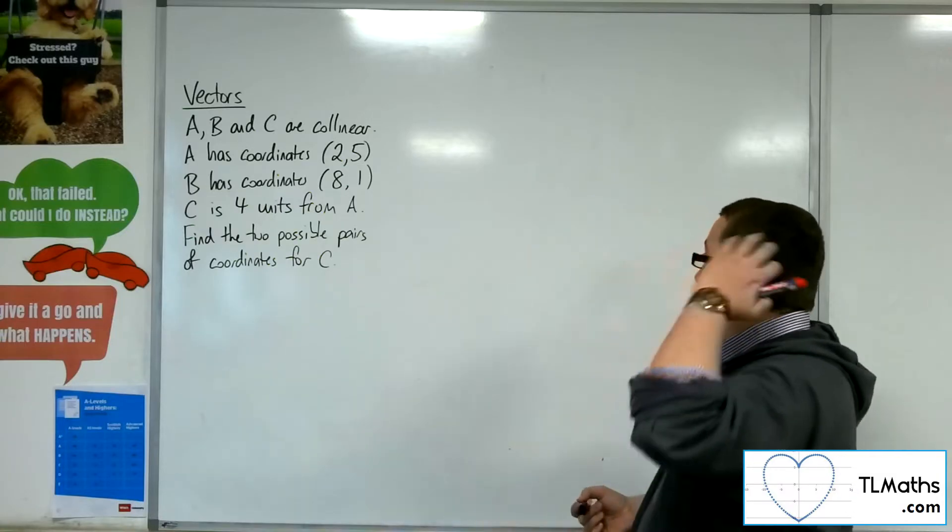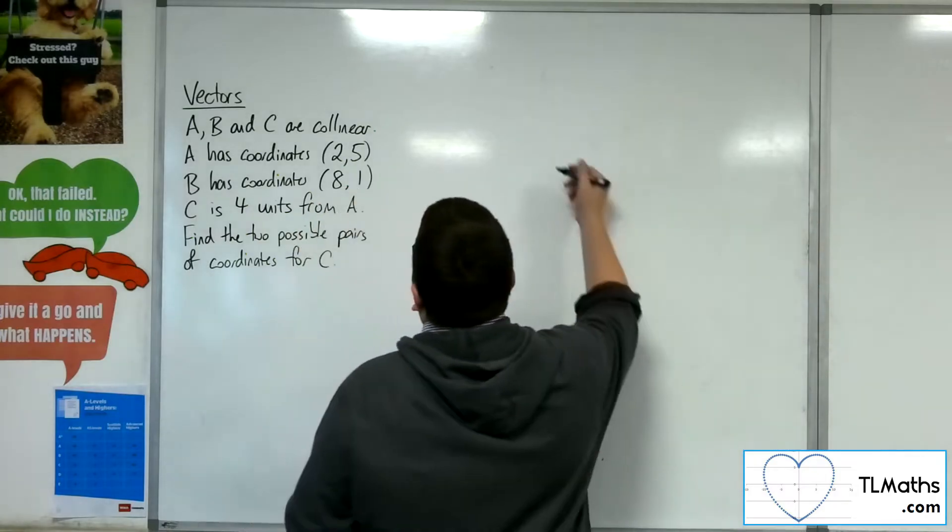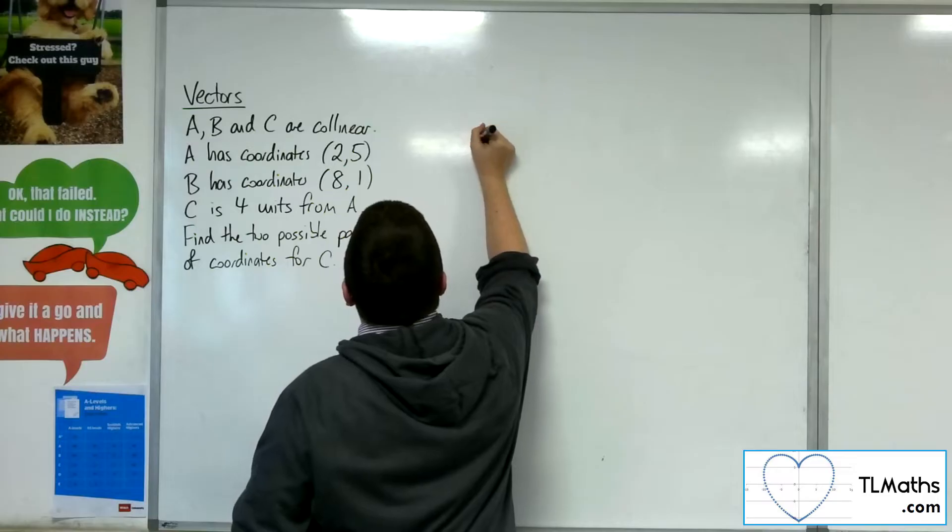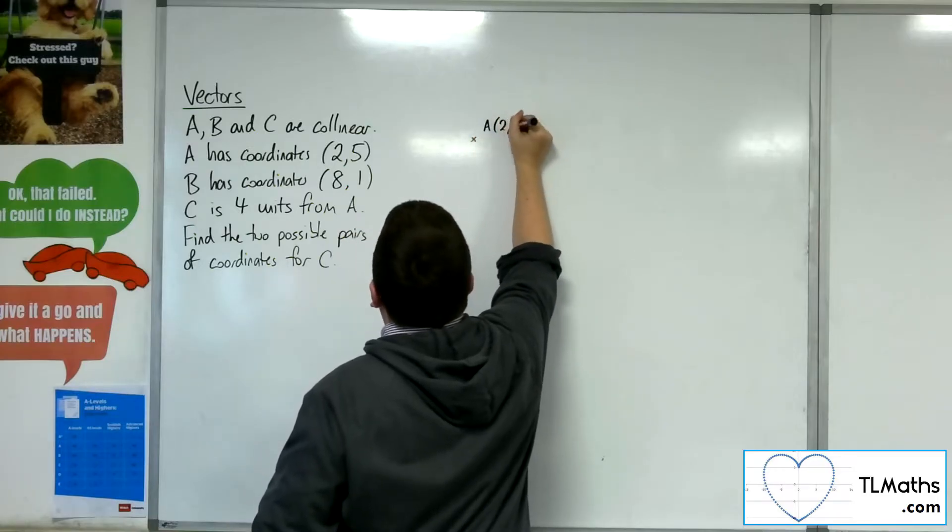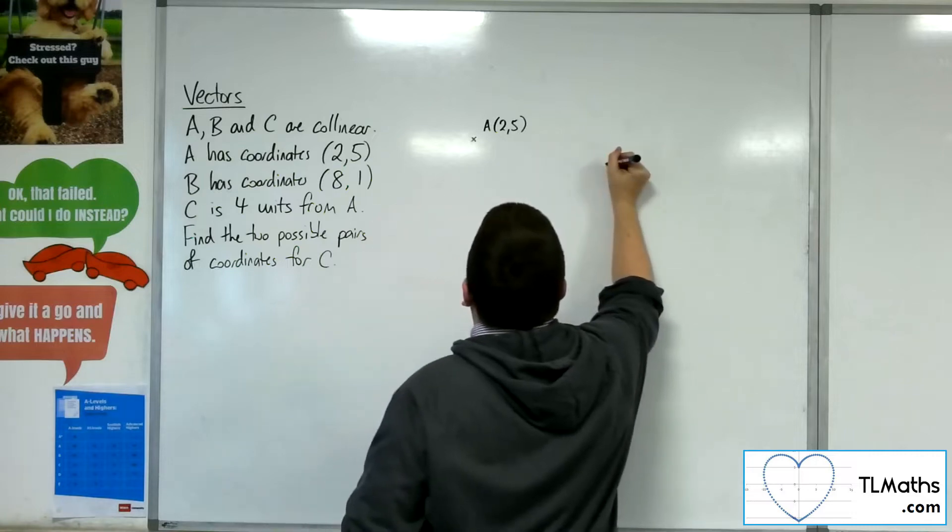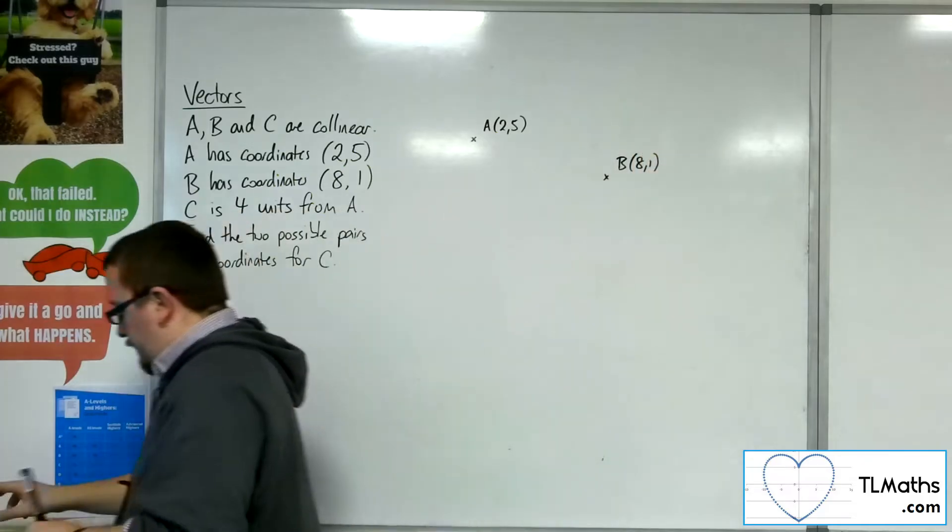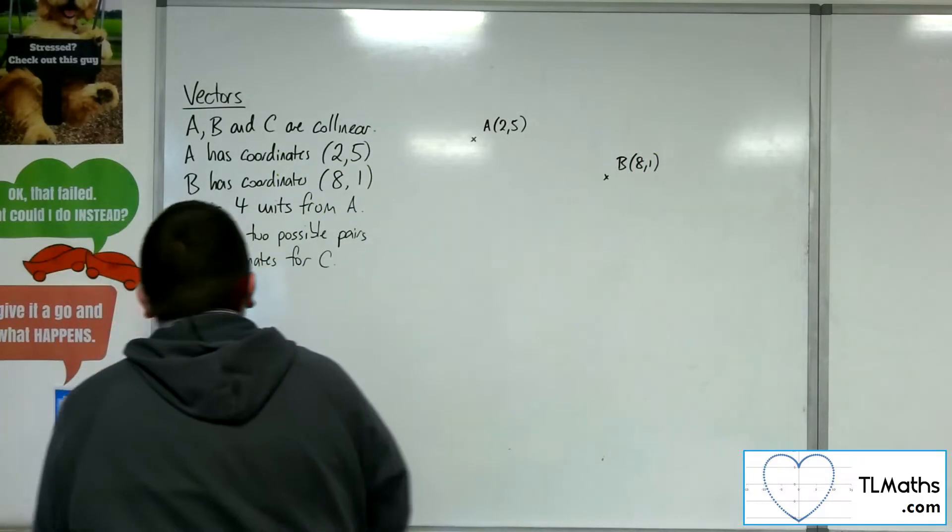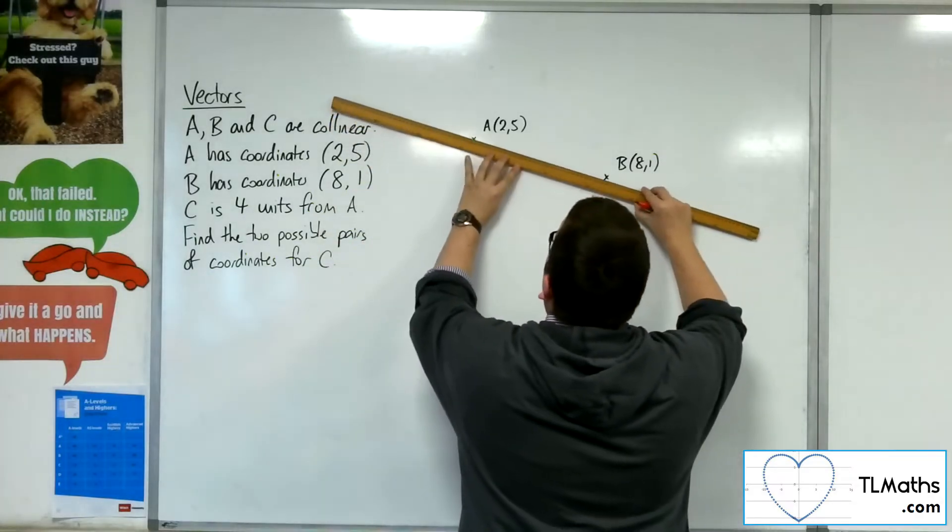So if we draw a diagram, then really we can visualize what's going on here. So we've got the point 2, 5. So this is point A. And we've got this other point, 8, 1. So further along and down. So here's B. And if I draw in the line going through these two points.